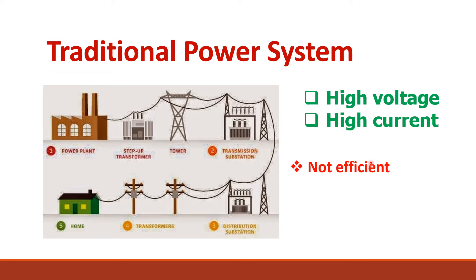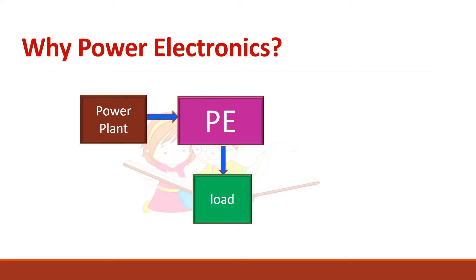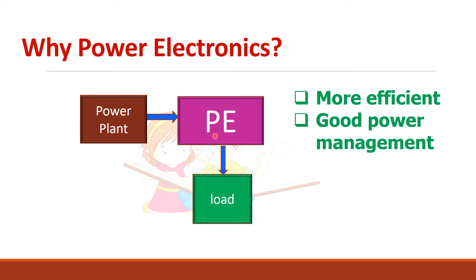Another major problem is that our load demand keeps on changing, and it is difficult to achieve a balance between the generation and the demand. So what is the need for power electronic converters? A power electronic converter connected between the source and the load helps to achieve higher efficiency and a proper power balance between the source and the load by changing the amount of power delivered to the load.